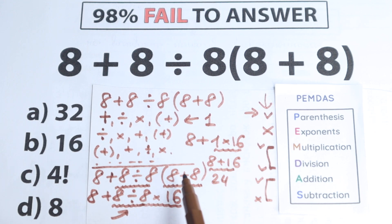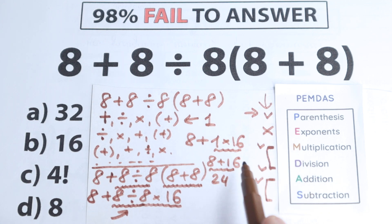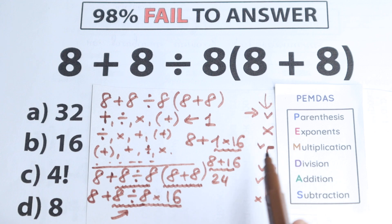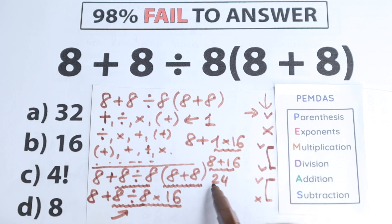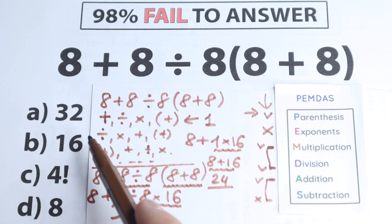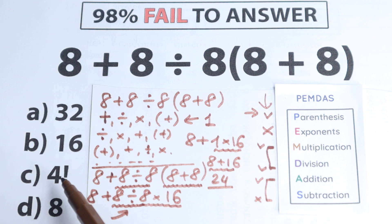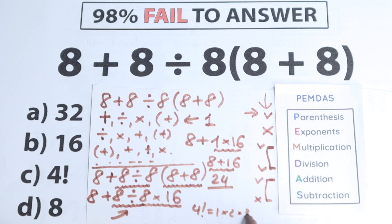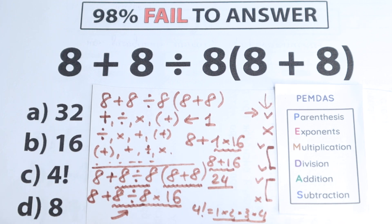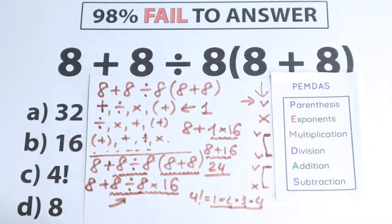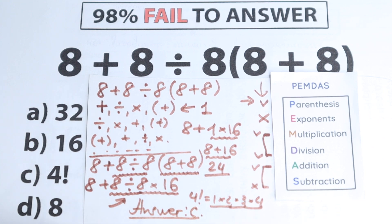I know that according to different order of operations the answer will be completely different — for example, according to BODMAS it will be a completely different answer. So the correct answer is 24. Looking at the options: we have 32, 16, 8, and 4 factorial. From school, 4 factorial is the product from 1 to 4: 1 times 2 times 3 times 4, which equals 24. So the correct answer is option C.